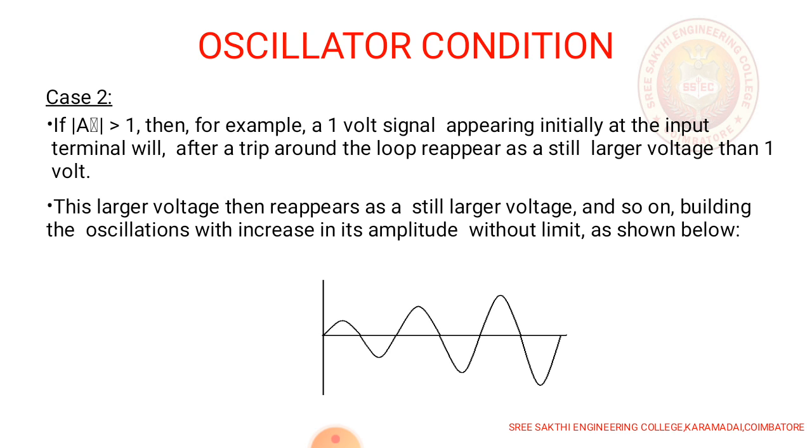Case 2 is if modulus of A beta is greater than 1. One volt signal appearing initially at the input terminal will, after a trip around a loop, reappear as a still larger voltage than that 1 volt. This larger voltage then reappears as a still larger voltage and so on, building the oscillation with increase in its amplitude without limit. The waveform shows that initially the amplitude is very small and when the time increases, amplitude also increases.